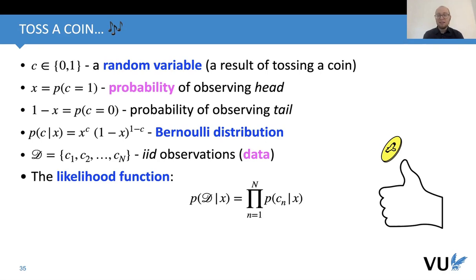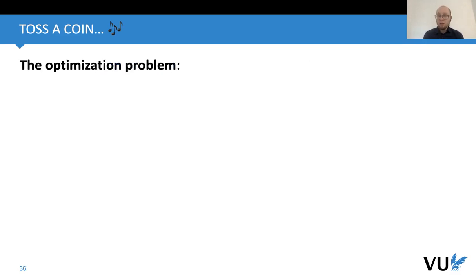Now we need an objective function, and statistics tells us that if we have iid data—identically and independently sampled—it means that every single observation comes from the same coin. For this data we can formulate the likelihood function. The likelihood function in this case is just a product because they are independently and identically sampled. They follow the same coin, so we have only one x, one probability explaining that.